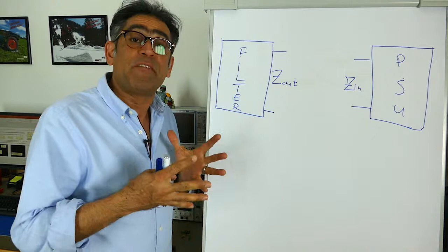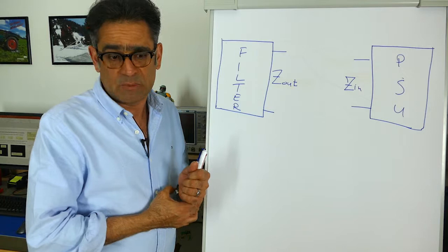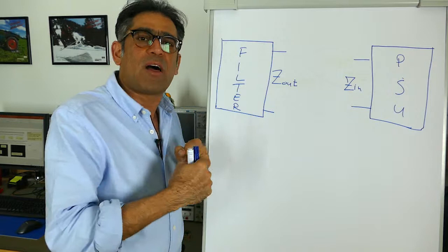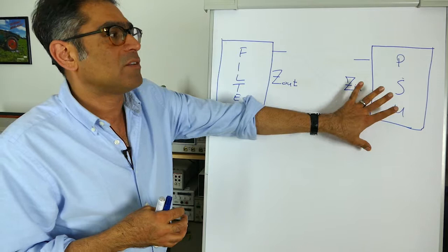Professor Middlebrook did a study on this and he came up with the notion that in order for the input filter not to interact with the power supply's control loop, the input impedance of the power supply when operating on closed loop conditions must be much higher than the output impedance of the filter.